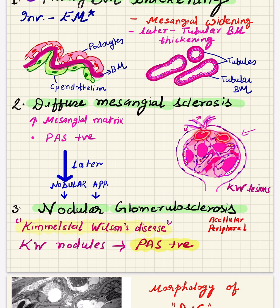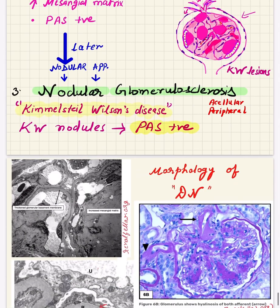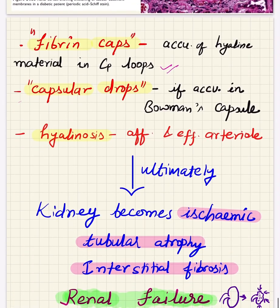The Kimmelstiel-Wilson nodules are generally seen peripheral in location. Due to mesangiolysis, there are also dilated capillaries seen next to these peripheral nodules. These nodules are very important and characteristic lesions seen in diabetic nephropathy. They are usually seen along with the accumulation of proteinaceous material in the capillary loops.